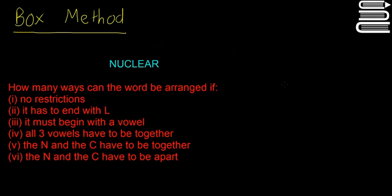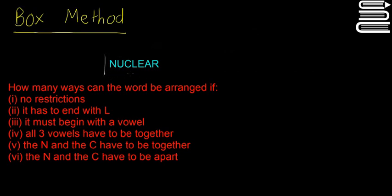Welcome back to our last video on probability. This is probably the most difficult question you'll get on the box method. I've tried to include every possible question they can ask, so if you know how to do all of these it should cover you for any question they ask. The word we have is 'nuclear' and it's asking a couple of different things about how many ways it can be arranged.